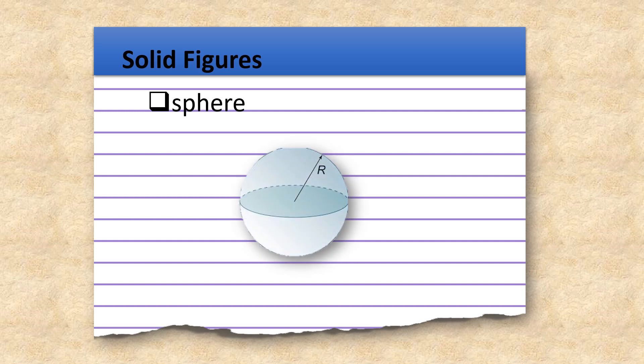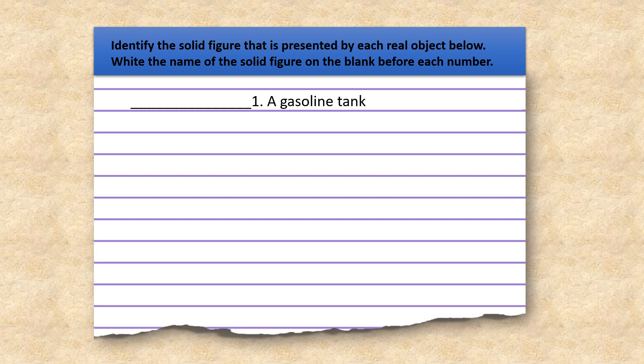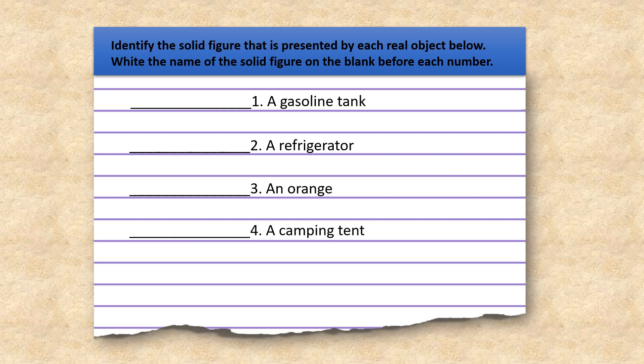Well done, children! Now, here are some real-life examples of solid figures. What kind of solid figures are they? Number one: a gasoline tank. Number two: a refrigerator. Number three: an orange. Number four: a camping tent. Number five: an ice cream cone. These are the correct answers.